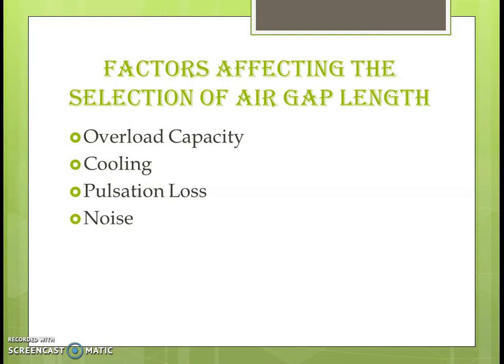These are some of the factors we discussed to decide the air gap length. In conclusion, power factor is one of the very important parameters, so to keep a good power factor, we have to design the machine with a minimum mechanically possible air gap length. But to increase the overload capacity, to increase the cooling effect, to reduce the pulsation loss, to reduce the noise effect, and to reduce the unbalanced magnetic pull, we may need a larger air gap length. So the designer has to decide which parameters are important and accordingly plan the air gap length.